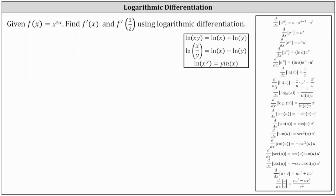We're given f of x equals x to the power of 5x and asked to find f prime of x and f prime of one half using logarithmic differentiation. Let's begin by replacing f of x with y and writing the given function as y equals x to the power of 5x.